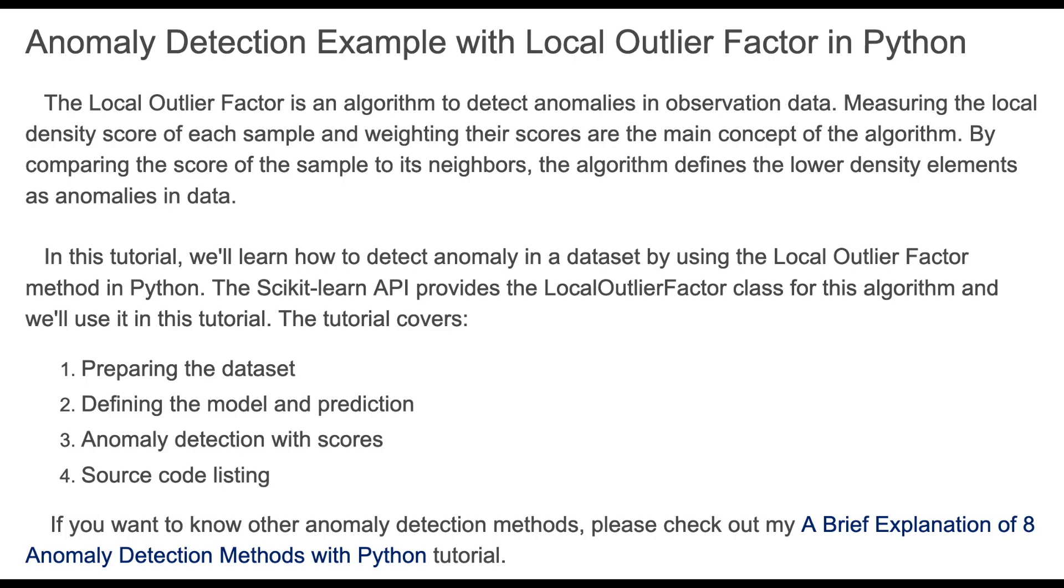The Local Outlier Factor is an algorithm to detect anomalies in observation data. Measuring the local density score of each sample and weighting their scores are the main concept of this algorithm. By comparing the score of the sample to its neighbors, the algorithm defines the lower density elements as anomalies in a dataset.